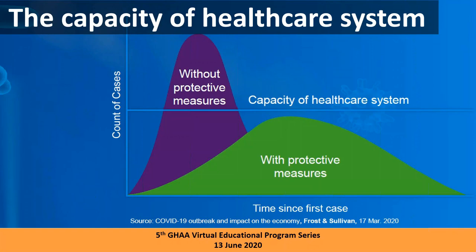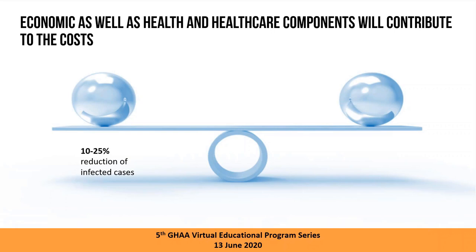Health and healthcare economy components contribute to economic cost. Some studies find that a 10 to 25% reduction in infected cases leads to a 20 to 60% loss of economic output. That means even while reducing cases, we're still losing money — because the aggressive measures needed to achieve that reduction affect other markets and the whole economy. It's like cancer treatment: sometimes it doesn't target just the cancer, it also affects healthy cells, causing adverse effects throughout.